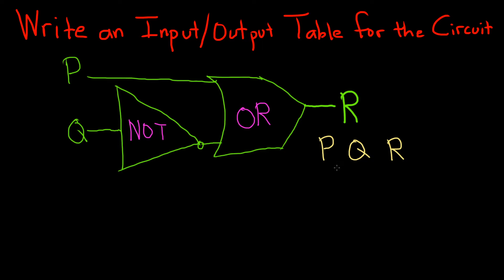The possible inputs for P and Q are pretty easy to figure out. One case is when they're both 1, another case is if P is 1 and Q is 0, another case would be if P is 0 and Q is 1, and the last case would be when both P and Q are 0.